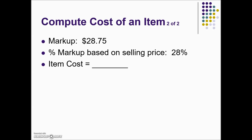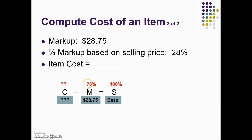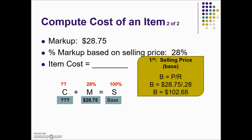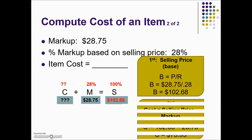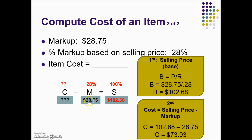In this last example, similar to the previous one, we're given a markup amount, a percent markup based on selling price of 28%, and the question asks for the cost. Plugging into our selling price formula — because markup is based on selling price that's the location of 100% — the percent markup is 28%. Using the markup rate and markup amount as the rate-and-part pair, we calculate the base: part divided by rate gives a selling price of $102.68. Subtracting the markup from the selling price leaves us with a cost of $73.93.